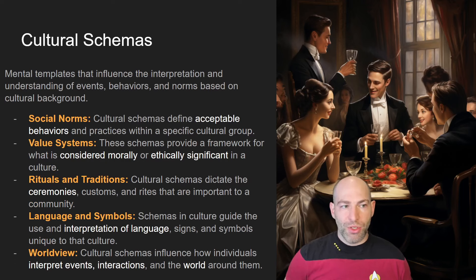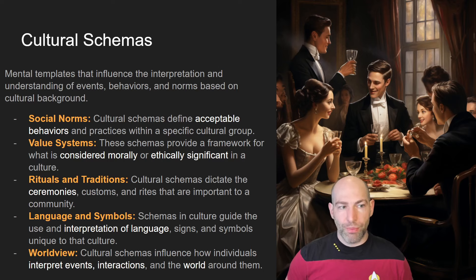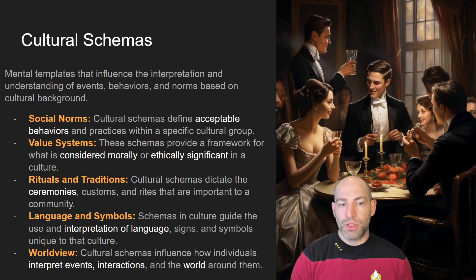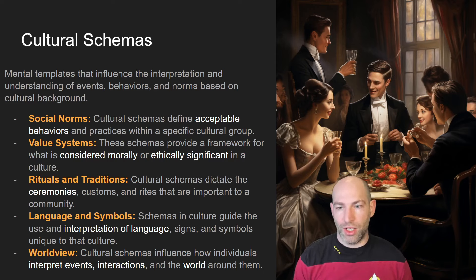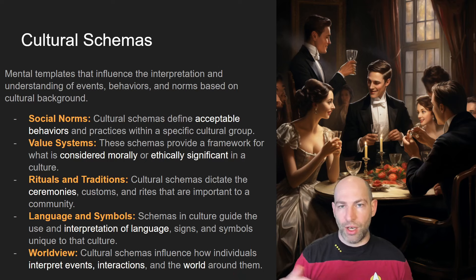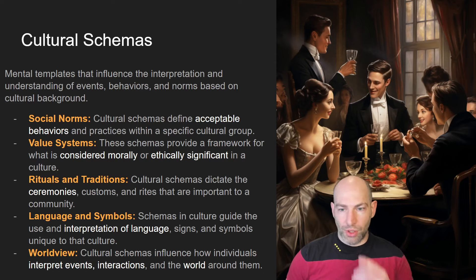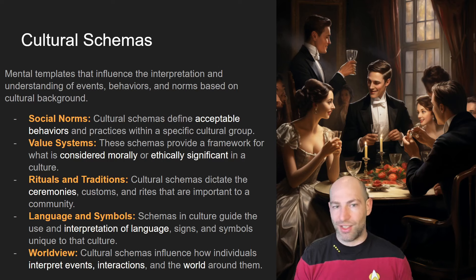Cultural schemas are mental templates that influence the interpretation and understanding of events, behaviors, and norms based on cultural background. Social norms are cultural schemas that define what is acceptable and unacceptable behavior within a certain group context. For example, watching Regency or aristocratic TV shows like Downton Abbey or Bridgerton reveals social norms that are very explicit and quite distinct from our culture today, which is one reason we find them fascinating.